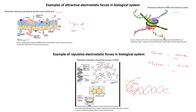Repulsive electrostatic forces can also be seen in proteins. If a protein is folded such that a positively charged amino acid faces another positively charged amino acid, they will repel each other. Similarly, if a negatively charged amino acid comes in front of another negatively charged amino acid, they will repel each other. This type of situation also gives rise to repulsive electrostatic forces in proteins.